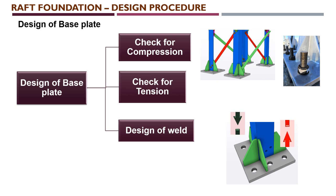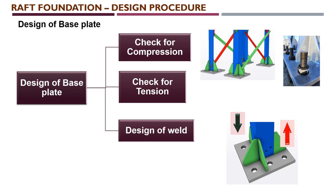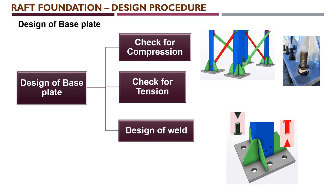Based on the compression and tension cases, the size and thickness of the base plate are determined. Finally, the weld between the stiffener, base plate, and main leg member must be designed. This weld design considers three major forces: longitudinal stress, perpendicular stress, and shear stress. With these three stresses, we check whether the assumed weld thickness, weld length, and weld type — either fillet or half-rounded — can withstand the applied forces. With this, the base plate design is complete.